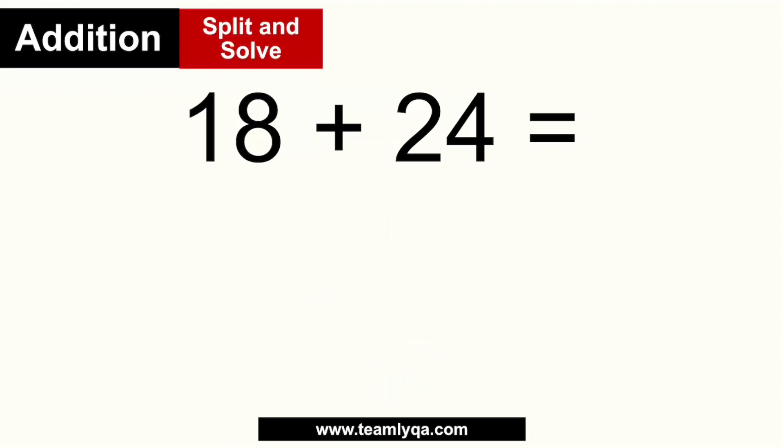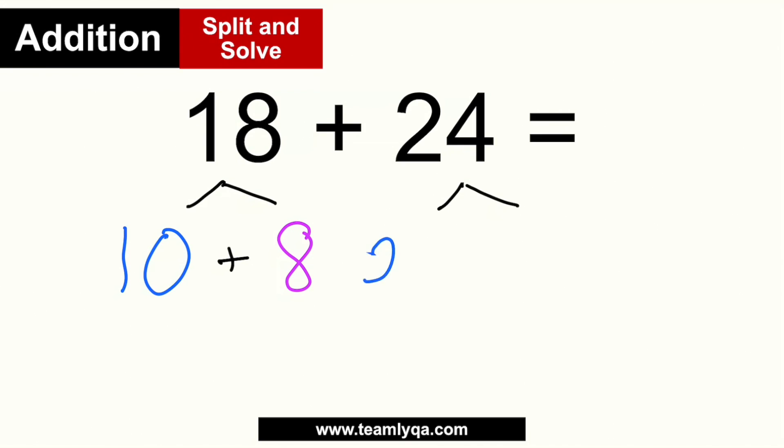This technique is what I call 'Split and Solve.' If you're adding numbers — especially if you're not allowed to write anything down — you split each addend into its tens and ones digits, add the tens together and the ones together, then combine those results. Let's apply it: 18 is a 10 and an 8 (since 10 + 8 = 18). For 24, it's a 20 and a 4.